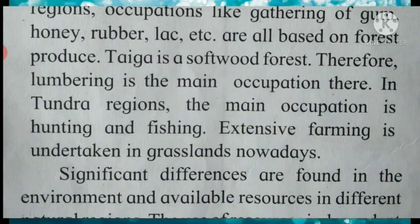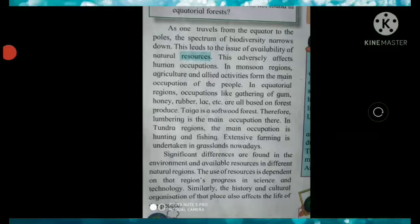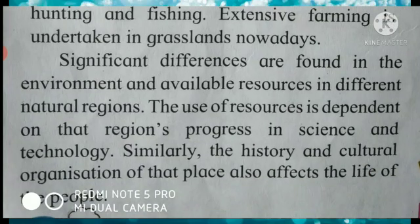Taiga is a softwood forest. Therefore, lumbering is the main occupation there. In tundra regions, the main occupation is hunting and fishing. Extensive farming is undertaken in grasslands. Significant differences are found in the environment and available resources in different natural regions. The use of resources is dependent on that region's progress in science and technology. Similarly, the history and cultural organization of that place also affects the life of people.